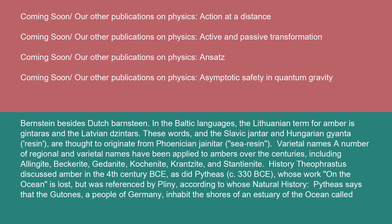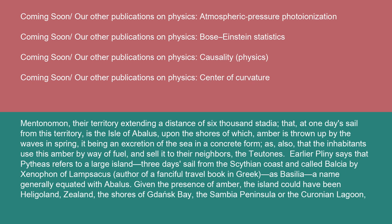History: Theophrastus discussed amber in the 4th century BCE, as did Pytheas c. 330 BC, whose work on the ocean is lost but was referenced by Pliny, according to whose Natural History: Pytheas says that the Gutones, a people of Germany, inhabit the shores of an estuary of the ocean called Mentanamon, their territory extending a distance of 6,000 stadia. That at one day's sail from this territory is the Isle of Abalus, upon the shores of which amber is thrown up by the waves in spring, it being an excretion of the sea in a concrete form, and that the inhabitants use this amber by way of fuel and sell it to their neighbors, the Teutons. Earlier, Pliny says that Pytheas refers to a large island, three days' sail from the Scythian coast, called Balcia by Xenophon of Lampsicus, author of a fanciful travel book in Greek, as Basilia, a name generally equated with Abalus.